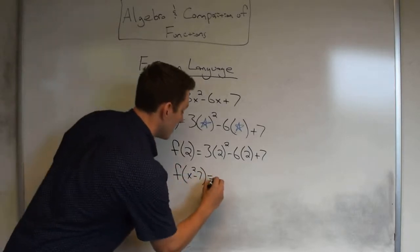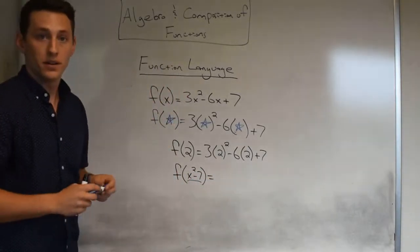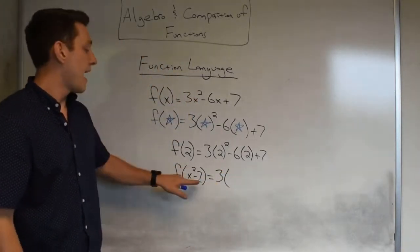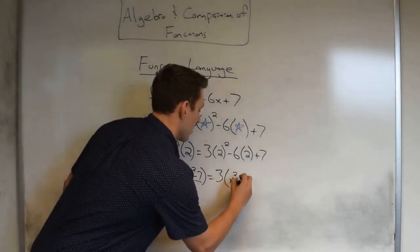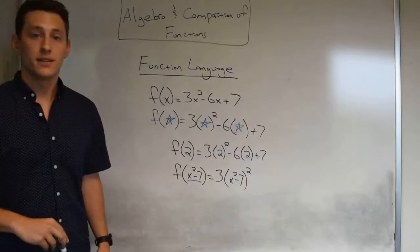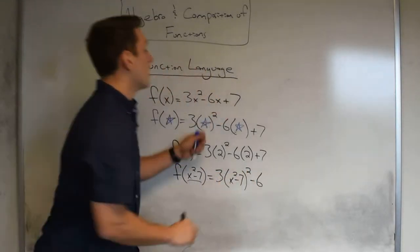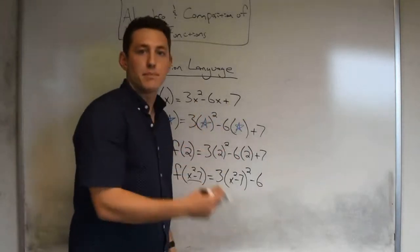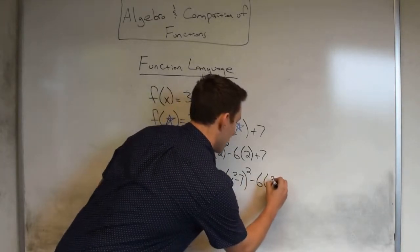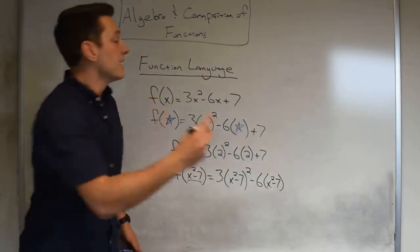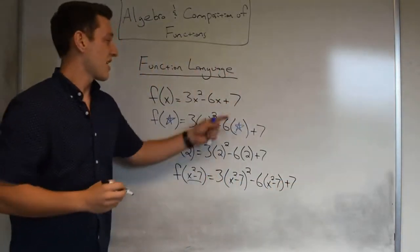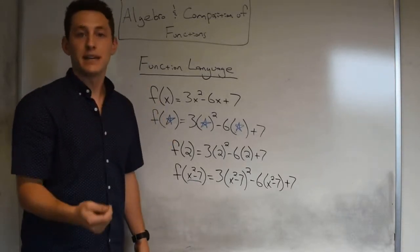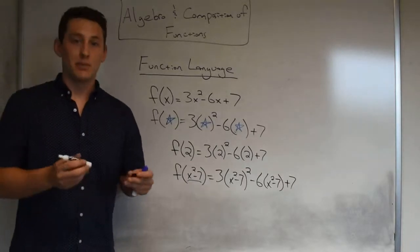So f(x² − 7) = 3(x² − 7)² − 6(x² − 7) + 7. Wherever you saw an x, you copy-paste (x² − 7) in its place. Function language can be confusing, but thinking of it as a fill-in-the-blank game helps. This is the key tool we'll use for composition of functions in the examples ahead.